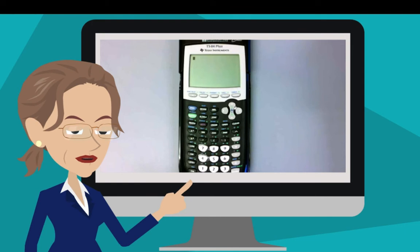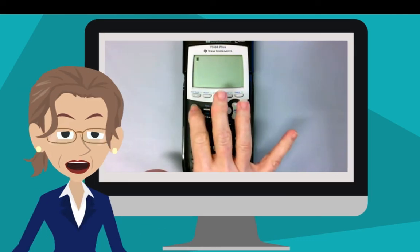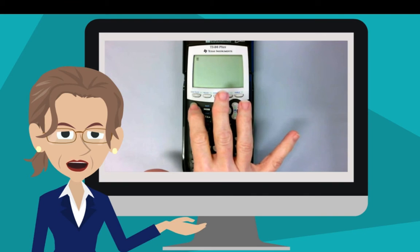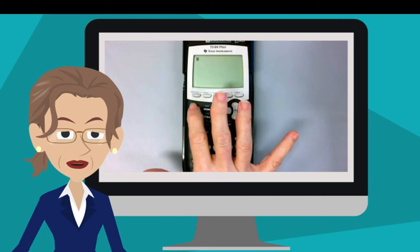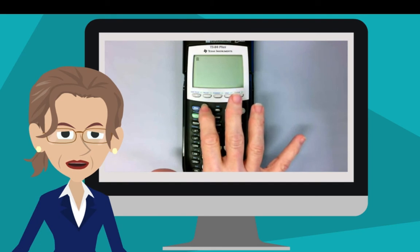So where is the quit key? Find the second function key and press it, because the quit key is a second function. Now move your finger just one key to the right of the second function key. This is the quit key.